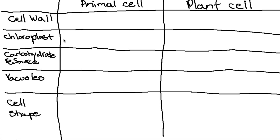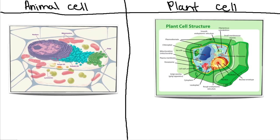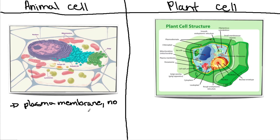We're going to be comparing animal cells and plant cells, and we're going to start with the cell wall. As we can see in this drawing, animal cells only have a plasma membrane — they don't have a cell wall.